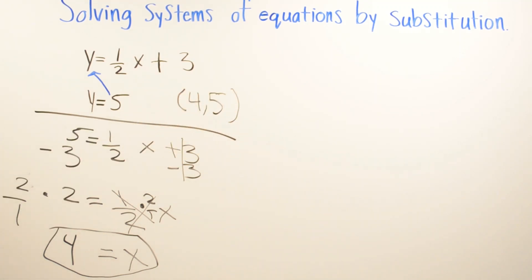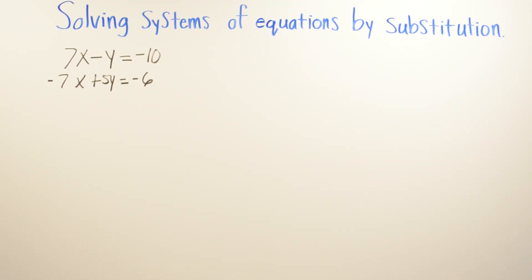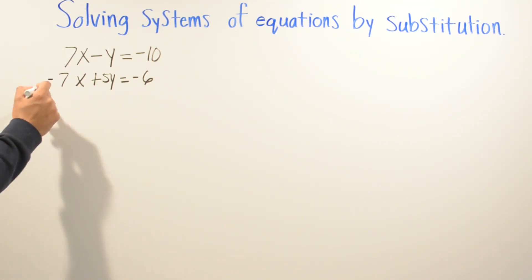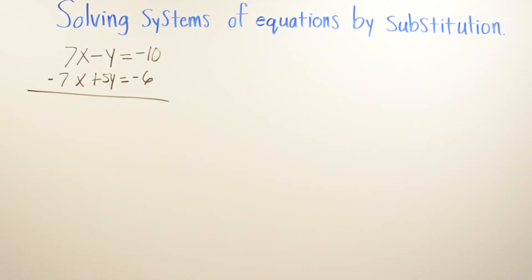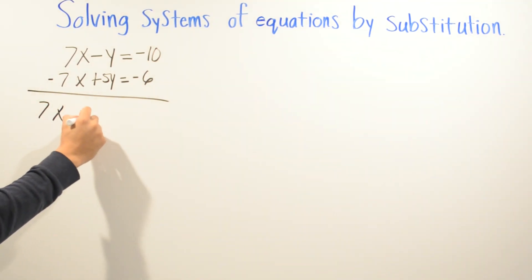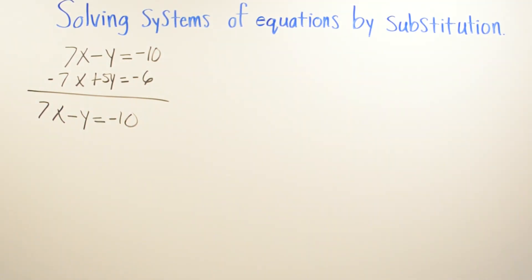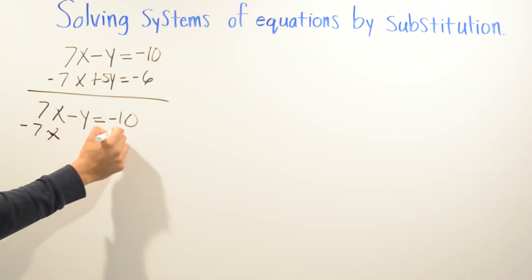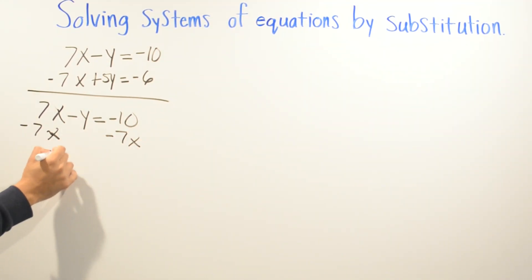In the second problem we have 7x minus y equals negative 10, and the other equation is negative 7x plus 5y equals negative 6. This problem doesn't have a variable already solved, so we choose one of the equations. I'll choose the top equation, 7x minus y equals negative 10, and solve for y by subtracting 7x from both sides, giving us negative y equals negative 7x minus 10.